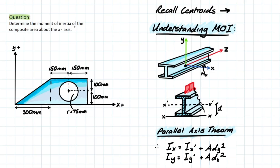Let's determine the moment of inertia of the composite area about the x-axis. We can see our composite here — we have a triangular shape, a rectangular shape, and a circular shape as a whole. All these different shapes are going to influence the total or global moment of inertia for this entire shape.